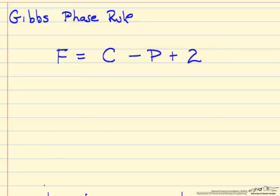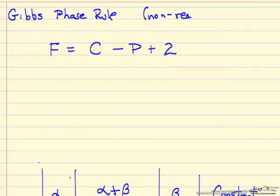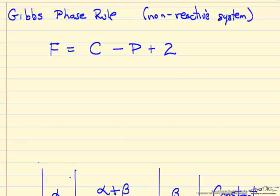Therefore, how many degrees of freedom are left when we do that type of calculation. So we're doing this for non-reactive, no chemical reactions, otherwise we have to take chemical reactions into account when we look at the phase rule.